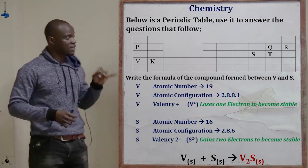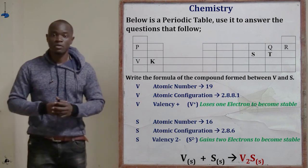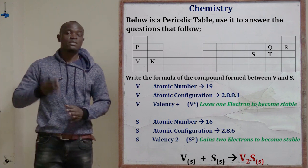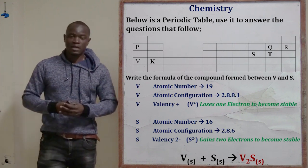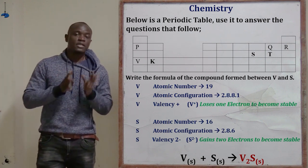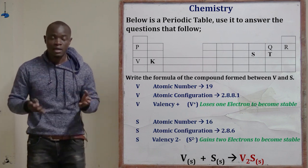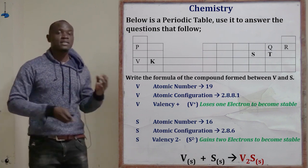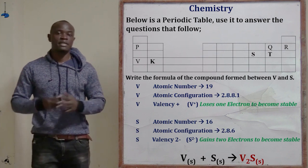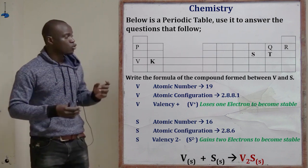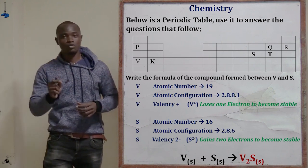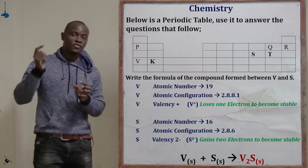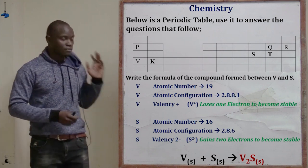To write the chemical formula, we interchange the valencies: the valency of S (which is 2) goes below V, and the valency of V (which is 1) goes below S. Since we do not indicate a valency of 1, the subscript under S is left blank (understood as 1). Therefore the compound formed between element V and element S is V₂S.